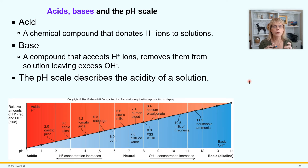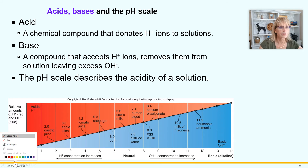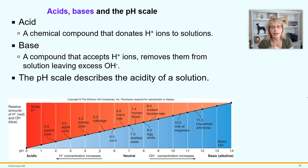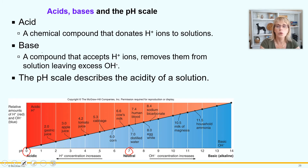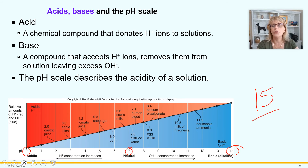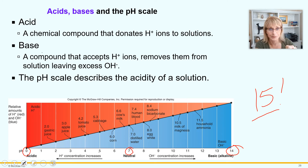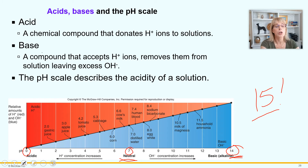The pH scale describes the acidity of a solution. pH 7 is completely neutral, and the pH scale goes from 0 to 14. If something claimed to have a pH of 15, that's impossible — the scale only goes to 14. The higher the number, up to 14, the more alkaline something is. The lower the number, down to 0, the more acidic something is.